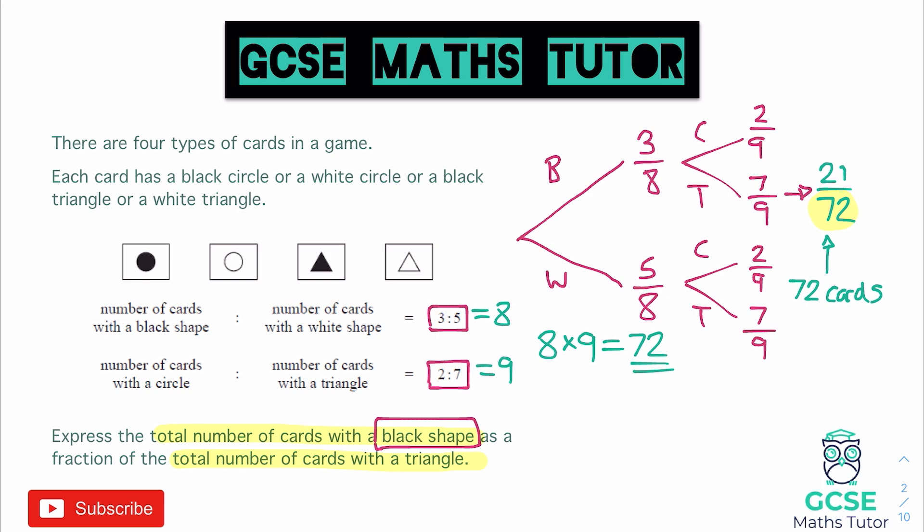So what amount of those are going to be black shapes? Well, it says the ratio of black shapes to white shapes is three to five. So if we use that ratio, we can split it up, black and white, in the ratio three to five.